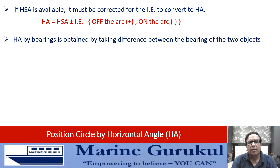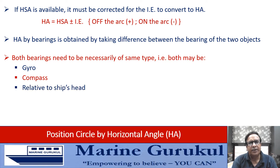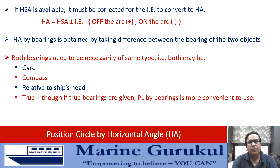Horizontal angle by bearings is obtained by taking the difference between the bearings of the two objects. Both bearings need to be necessarily of the same type — both may be gyro bearings, or both compass bearings, or both relative bearings with respect to ship's head. However, if both happen to be true bearings, then we can use them as position lines, and there will be no need to deploy the concept of position circumference.